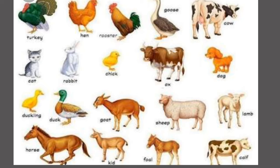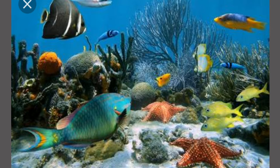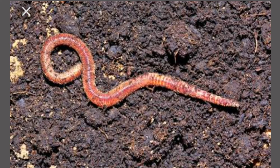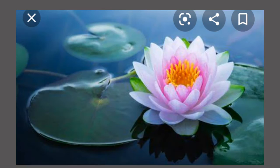If you look around your surroundings, you will see different organisms from small to big, and they have different living places. Some organisms live under the water while others live on the land. Some fly in the sky like birds, while others crawl like earthworms and make burrows under the soil.